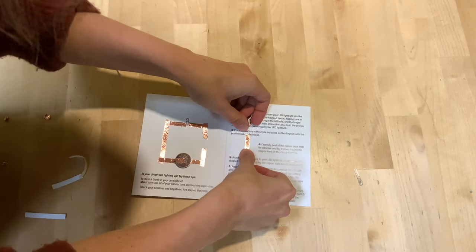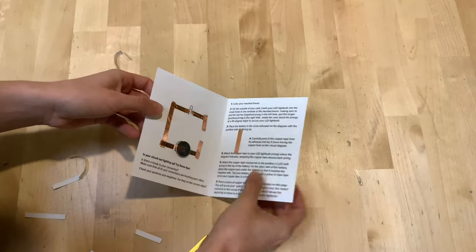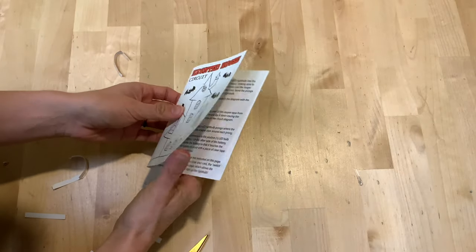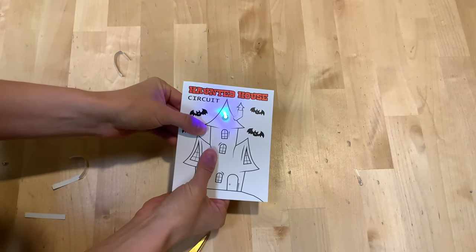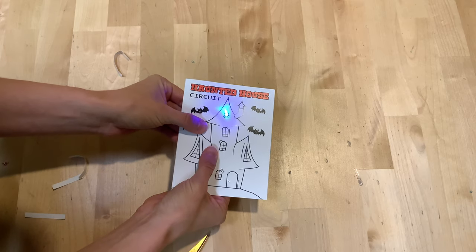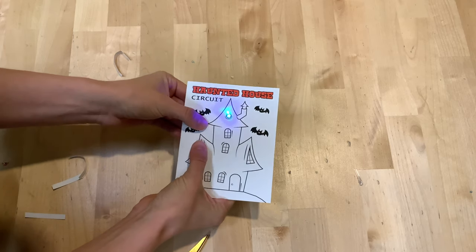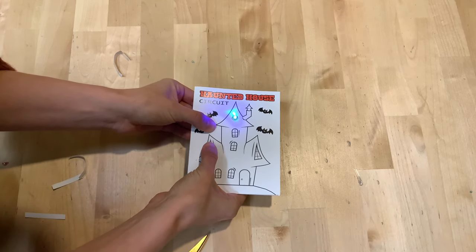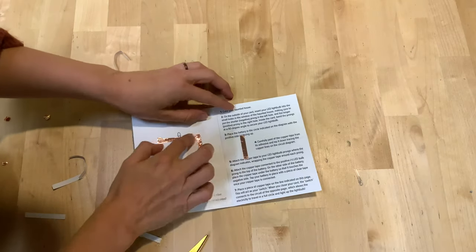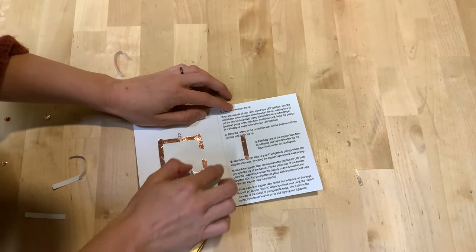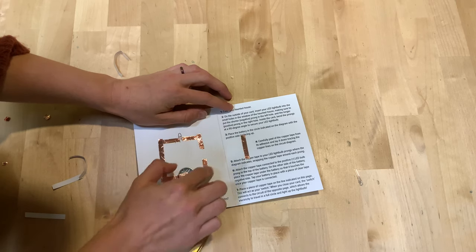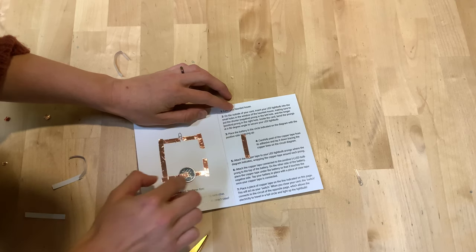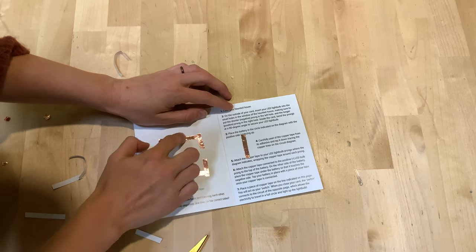So right now when the card is open the switch is off, but if we close the card and if everything lines up correctly our switch turns on. When our switch is on we have a complete closed circuit so all of these copper parts are touching each other and making a complete closed circuit allowing the electricity to travel in a full circle from the battery to the light bulb.